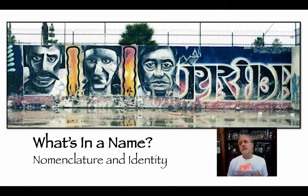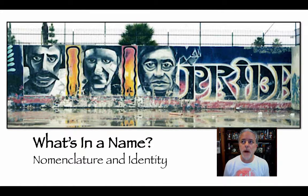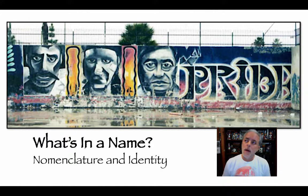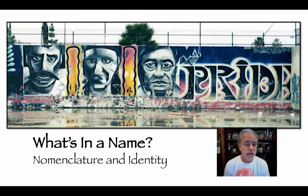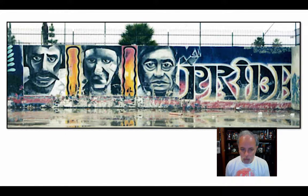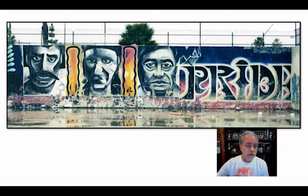The way that I like to begin talking about names and identity is by talking about muralism — Chicano muralism, or Mexican-American muralism here in Los Angeles, California. The first image I'd show you is the one you see right here in front of you.